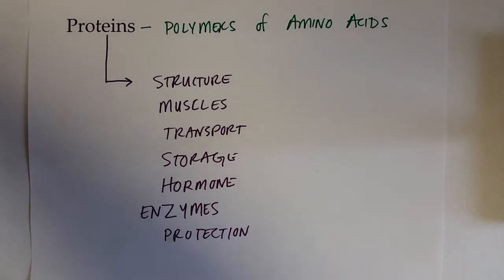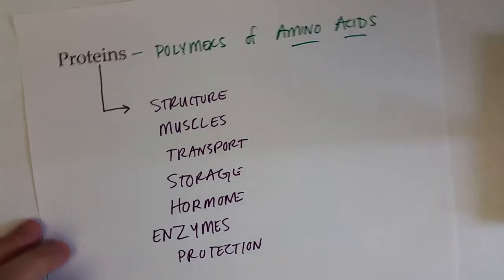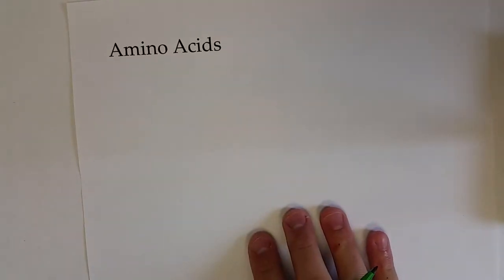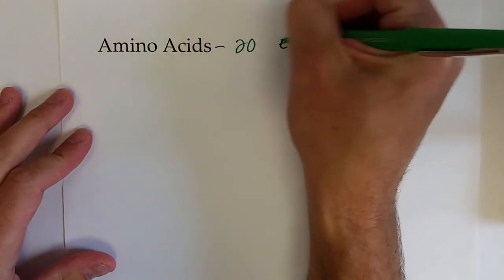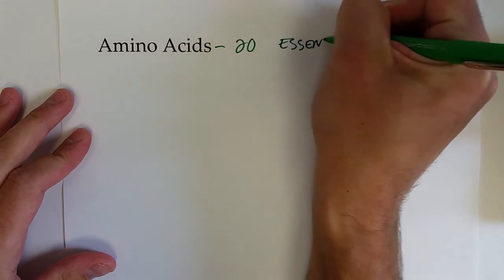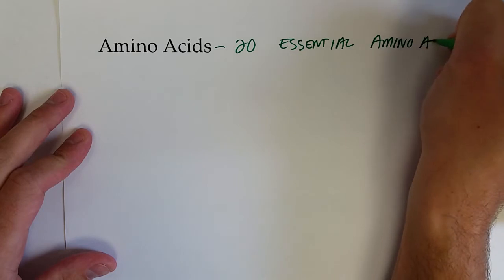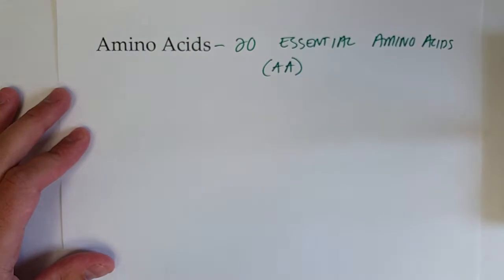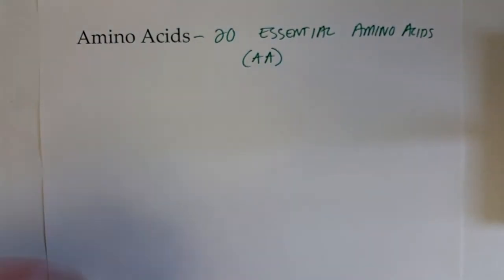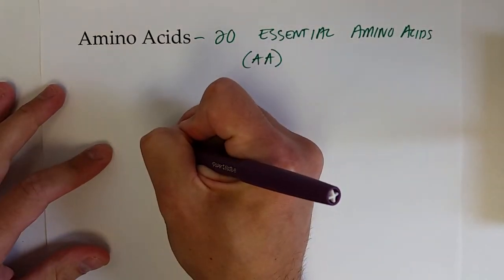So to start off our topic of proteins, we'll first start talking about what amino acids are. Now there are 20 essential amino acids that you need in your body and have in your body. Amino acids will often get abbreviated AA. And their structure is very similar or the basis of the structure is very similar. All amino acids have this essential basic structure.